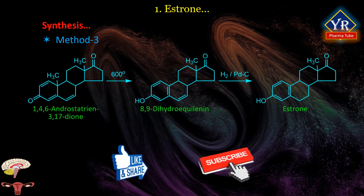Method 3 starts from 1,4,6-androstatriene-3,17-dione. When heated to 600°C, ring A is aromatized and releases a methane molecule present at the 10th position, forming 8,9-dihydroequilenin. The double bond at C6–C7 is then reduced by hydrogen over a palladium catalyst, giving the compound estrone.